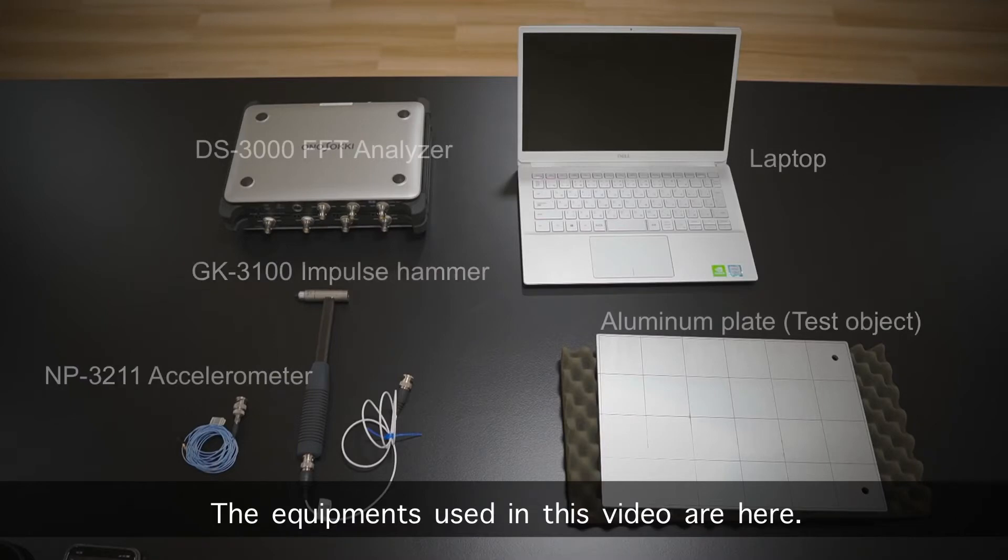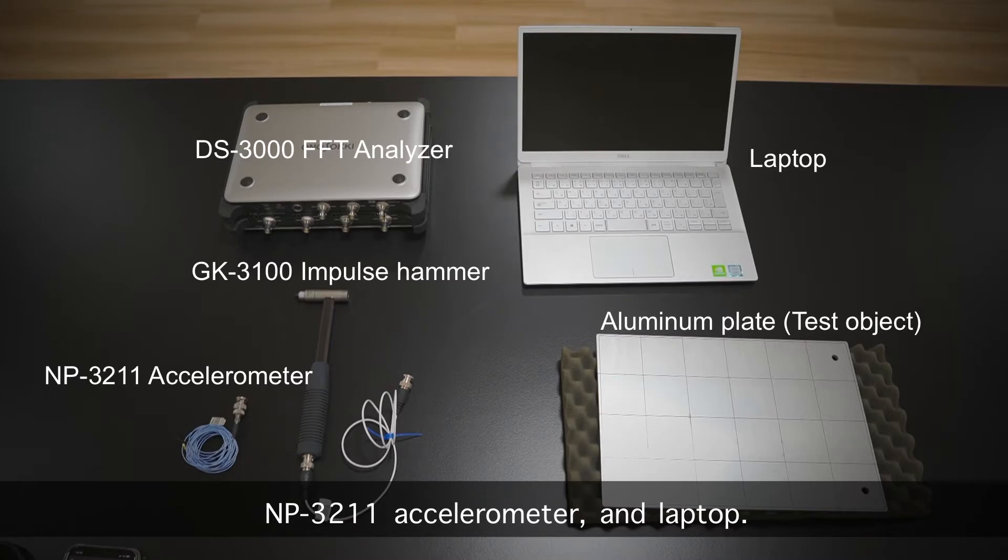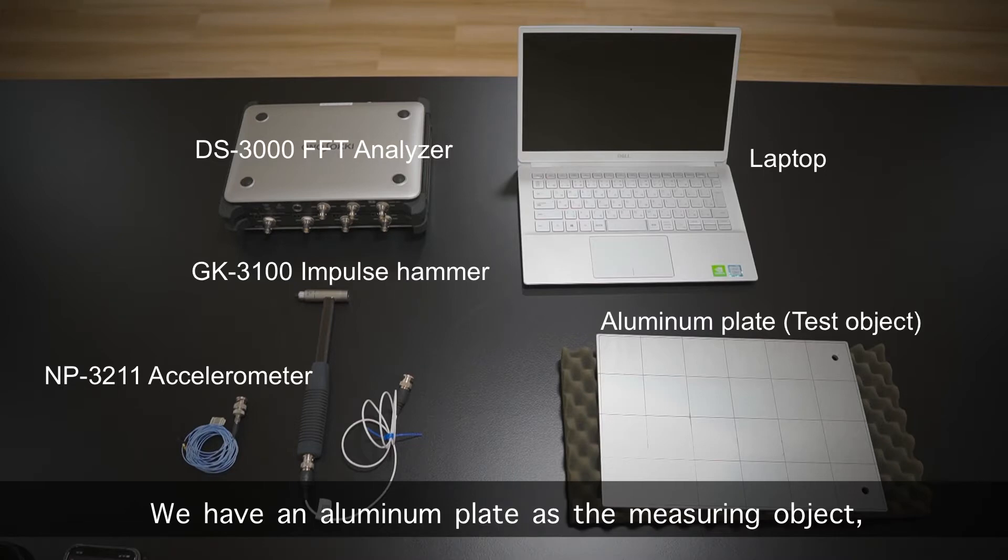The equipment used in this video is here. DS-3200 FFT analyzer, GK-3100 impulse hammer, NT-3211 accelerometer, and laptop. And we have an aluminum plate as a measuring object. We put it on the cushioning material, that it can vibrate freely.